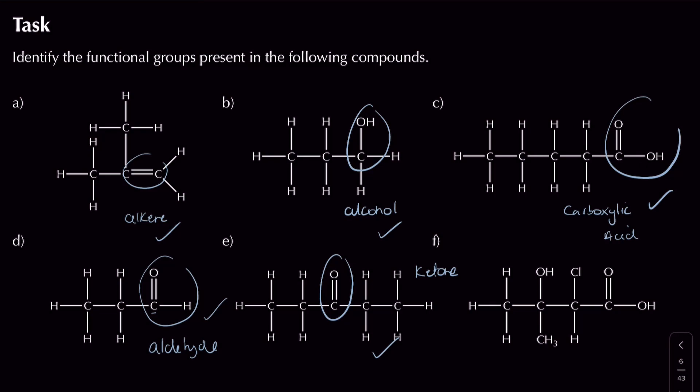The last compound is more complex — you can actually have more than one functional group in a molecule, and most organic compounds do. From right to left: there's a carboxylic acid functional group; there's a carbon-chlorine bond, so it's also a chloroalkane; and there's a carbon bonded to an oxygen and a hydrogen, so there's an alcohol group as well. At the bottom there's a CH3 group — that's not a functional group but a methyl (alkyl) group branching off the main chain.